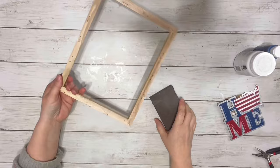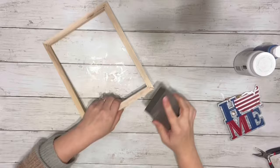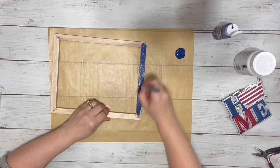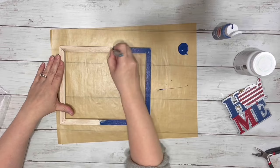So the first thing I did was remove the canvas from the frame and sanded the whole thing down. And then I took my admiral blue acrylic paint and painted the entire frame, the front and back and inside, and I did two coats.